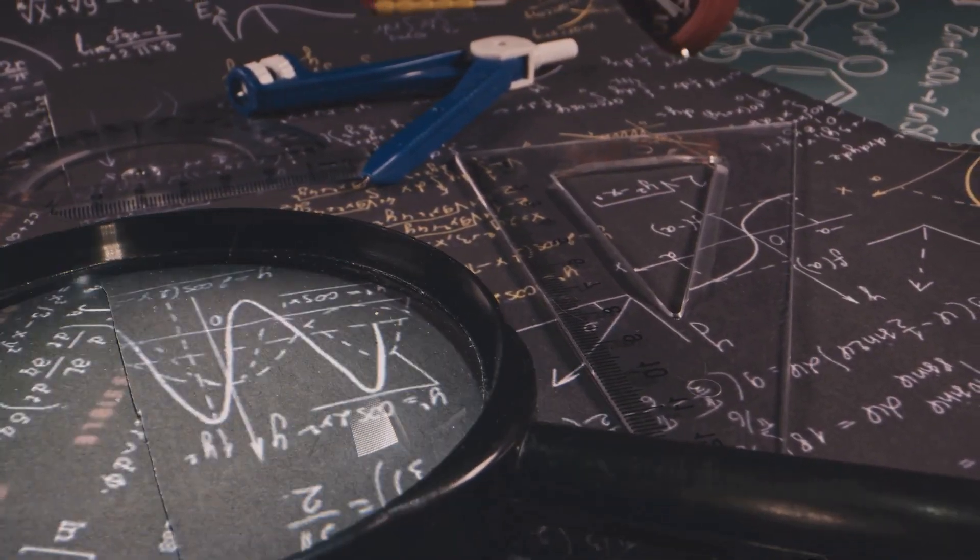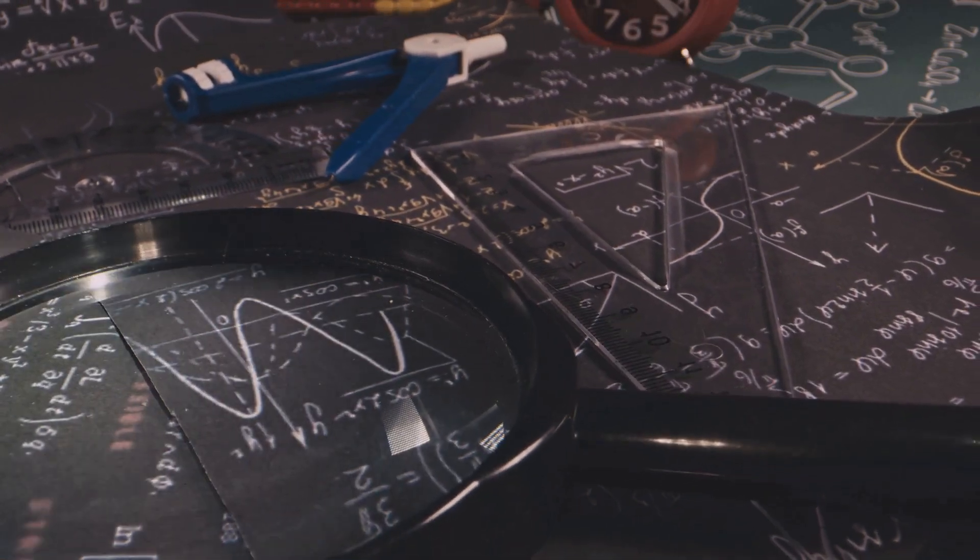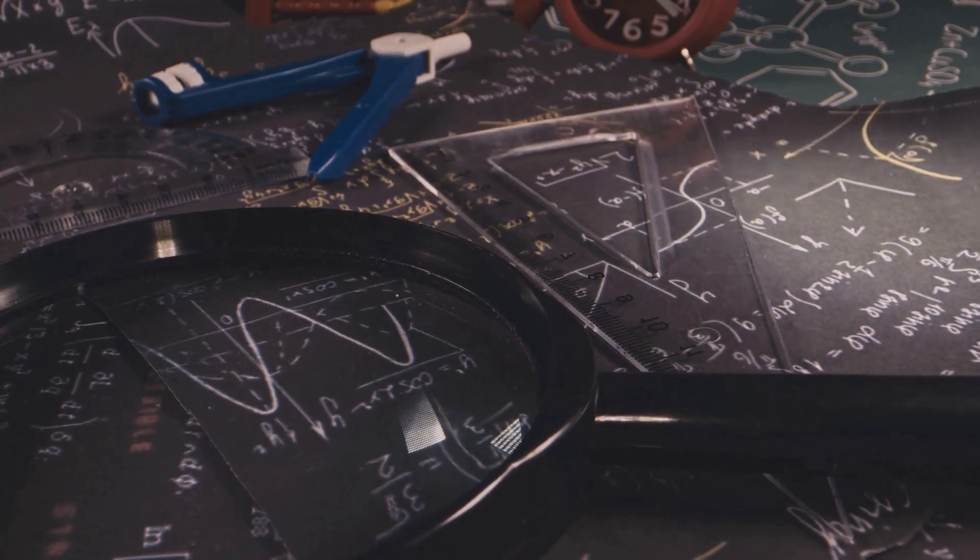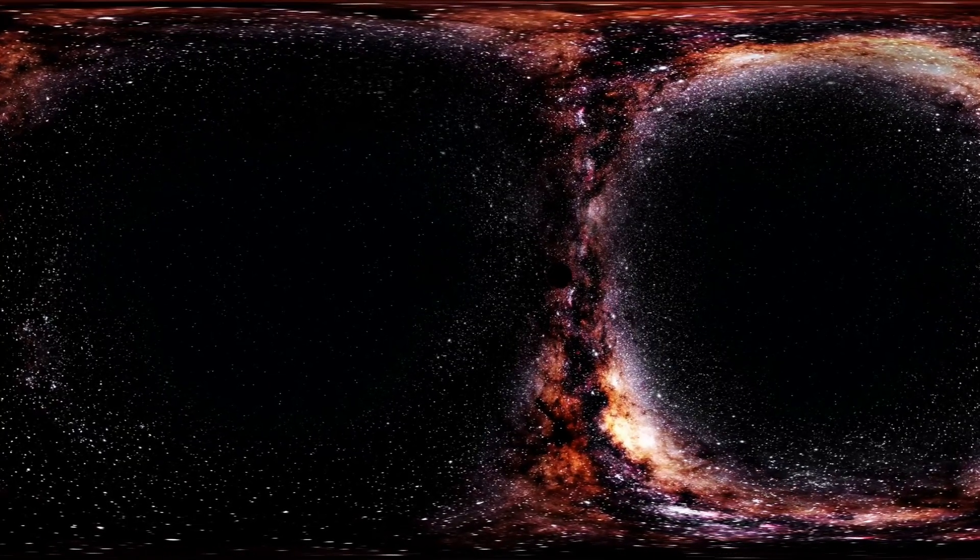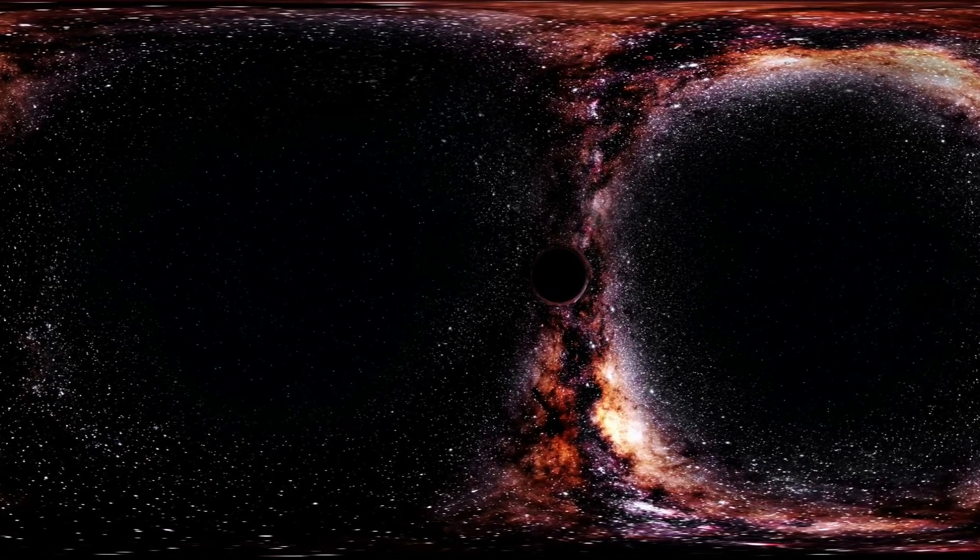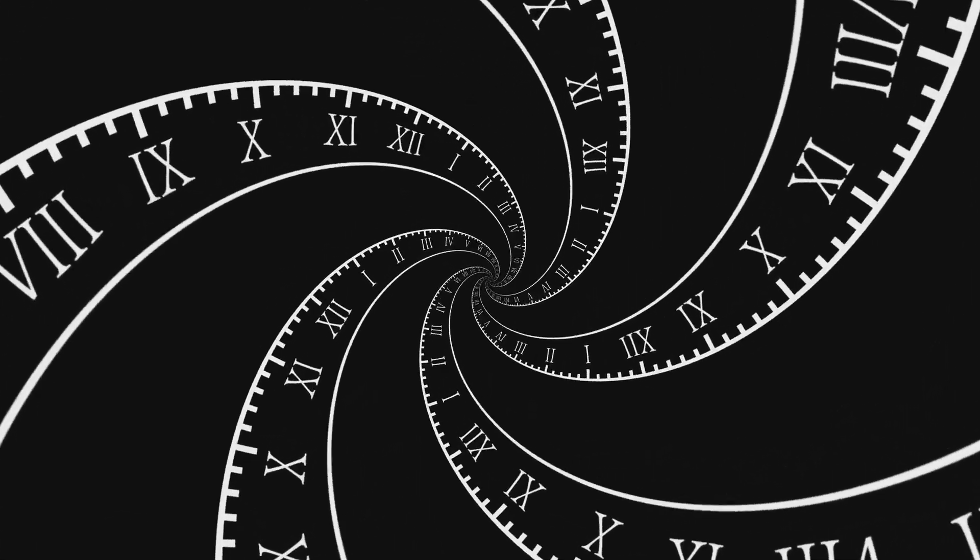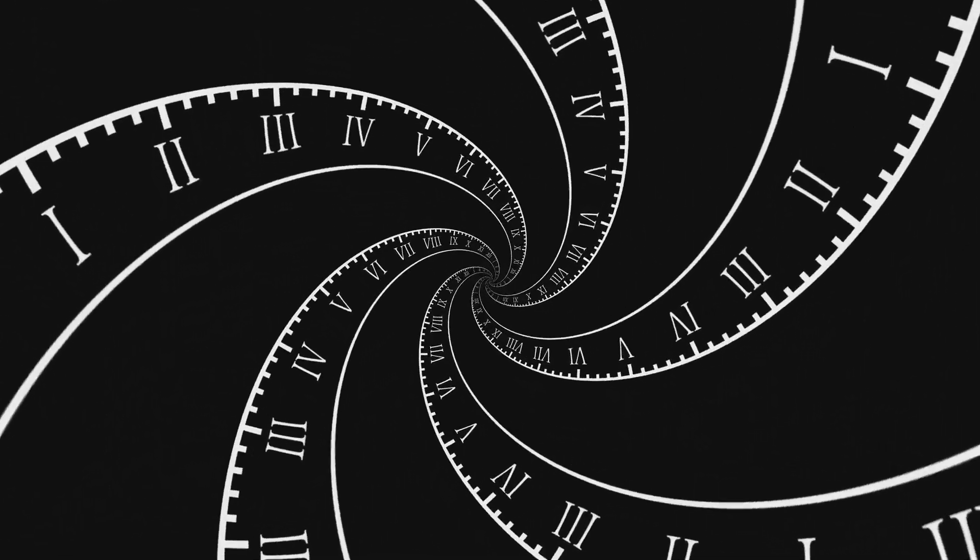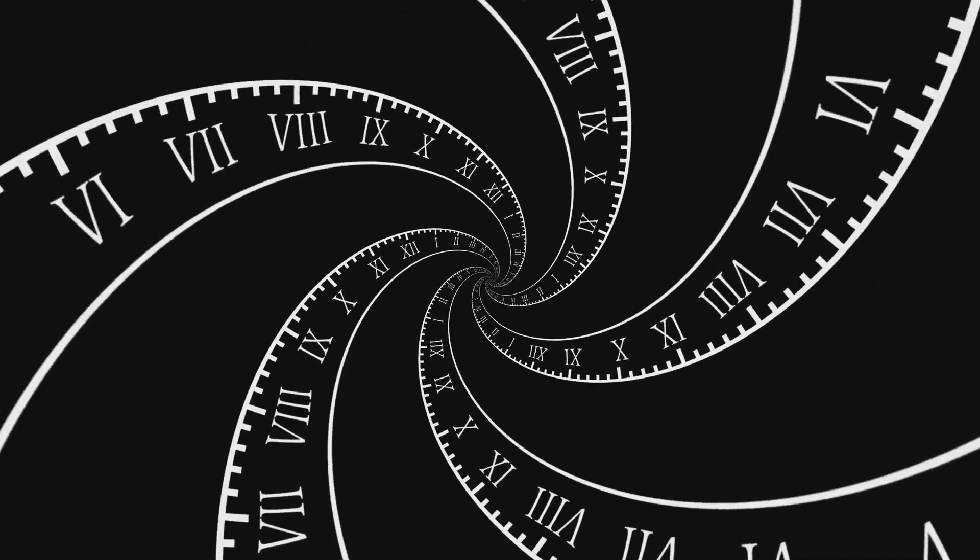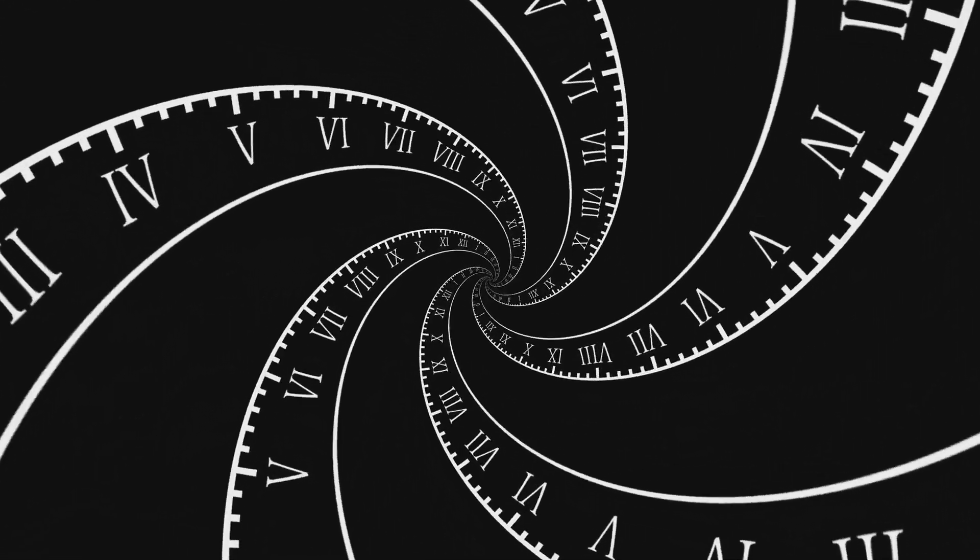As we delve deeper into the mysteries of time bubbles, we find ourselves confronting some of the most fundamental questions about the nature of reality itself. If time can be warped, stretched, and potentially even looped back on itself, what does that tell us about the very fabric of the cosmos? Is our perception of time as a linear progression from past to future merely an illusion, a consequence of our limited perspective within a far grander, more complex temporal reality?